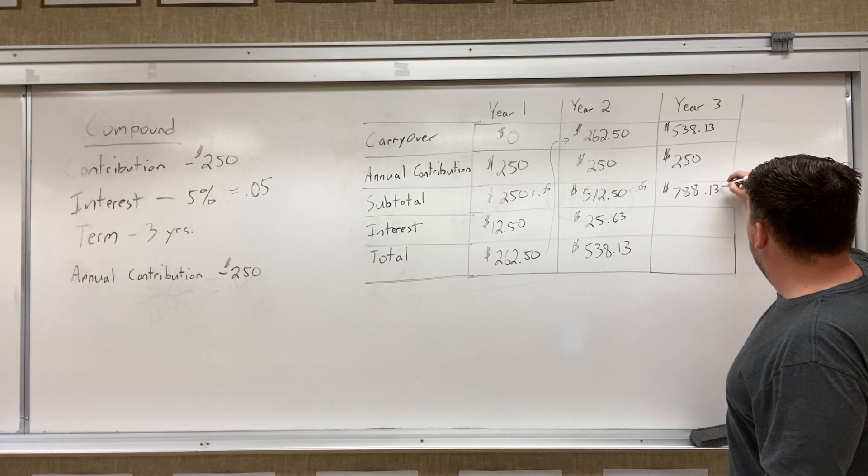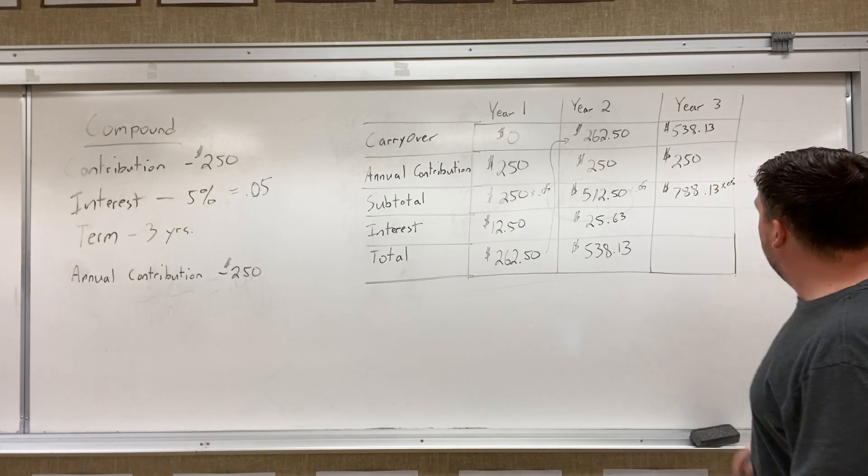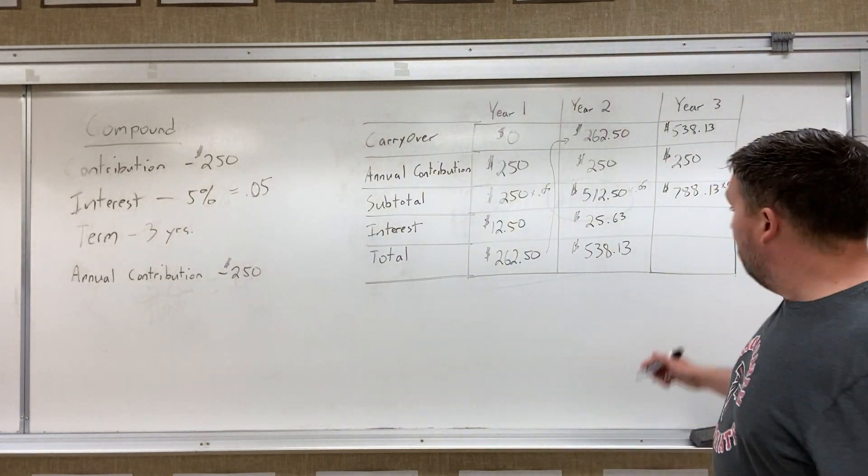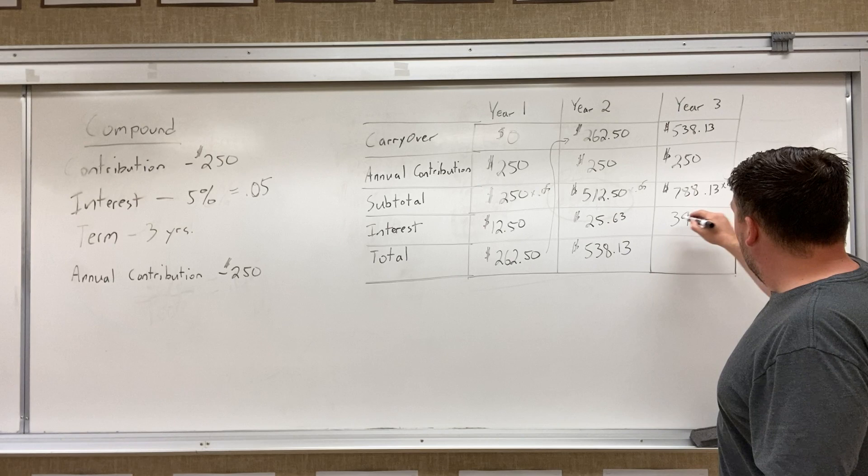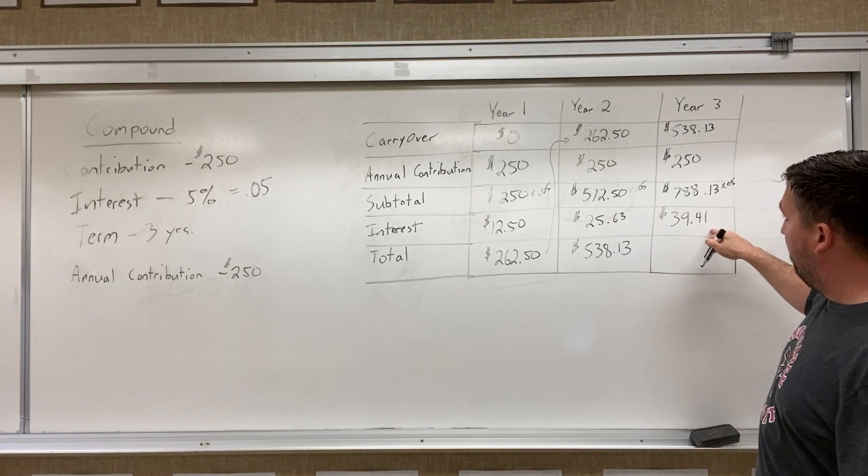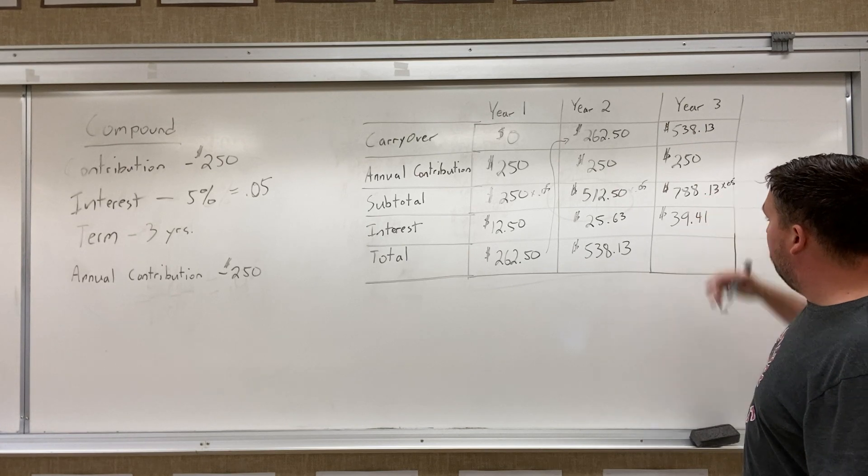So we're gonna do the same thing. We're gonna do times 0.05 for the 5% interest. And for that year, we're going to get $39.41 as our interest earned for that year, from what's sitting in the bank account.